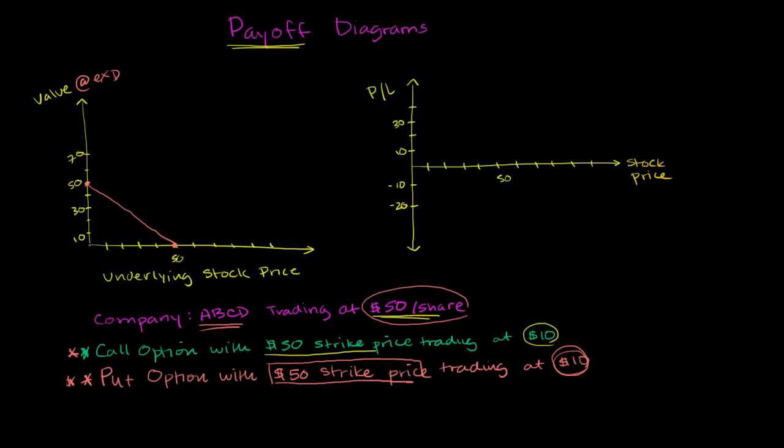But if you get above $50, you would want to exercise your call option. If the stock is worth $60 at expiration, then your call option is worth $10 because you have the right to buy something for $50 which you can sell for $60. So then you have the value of your call option going up.